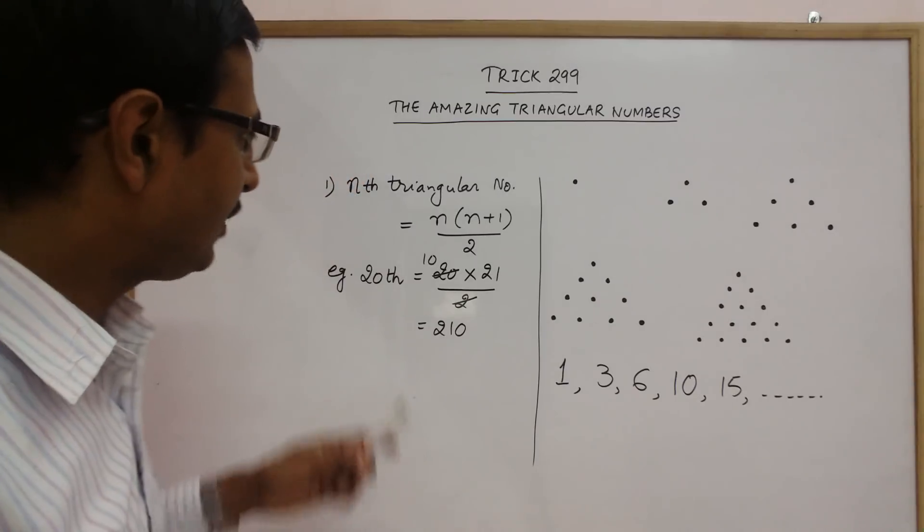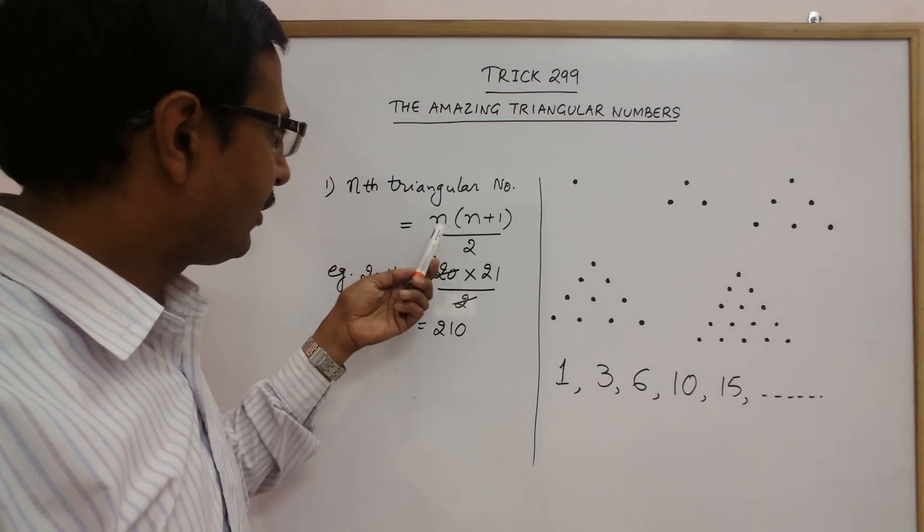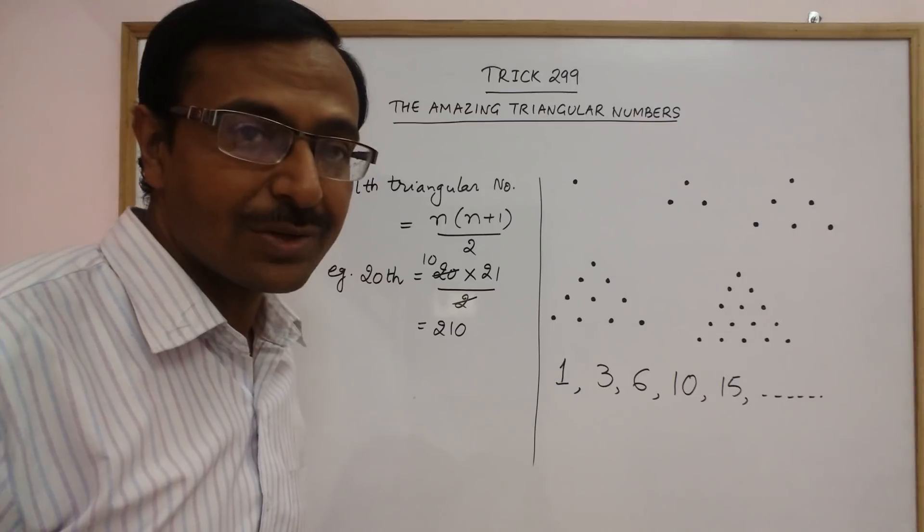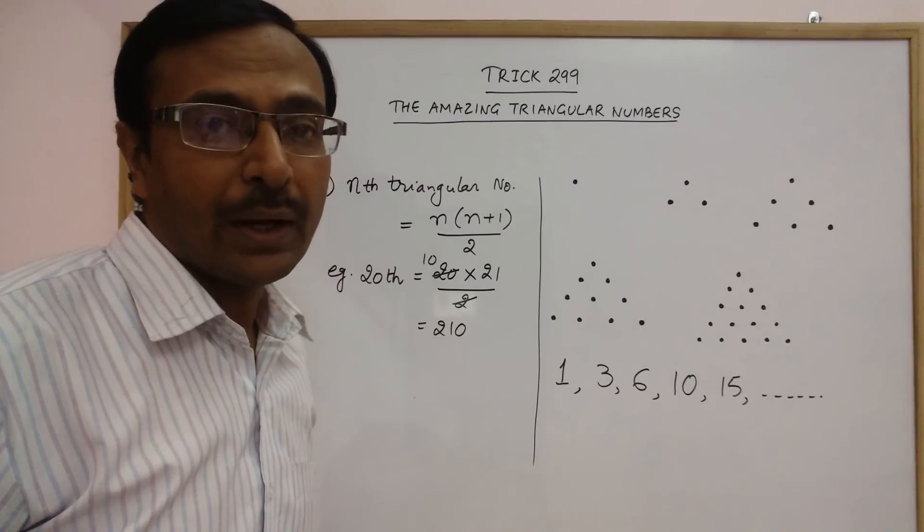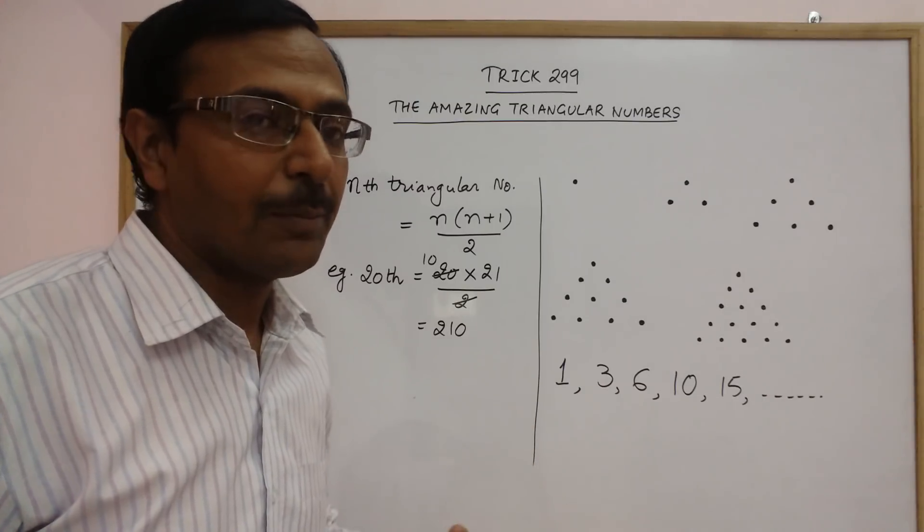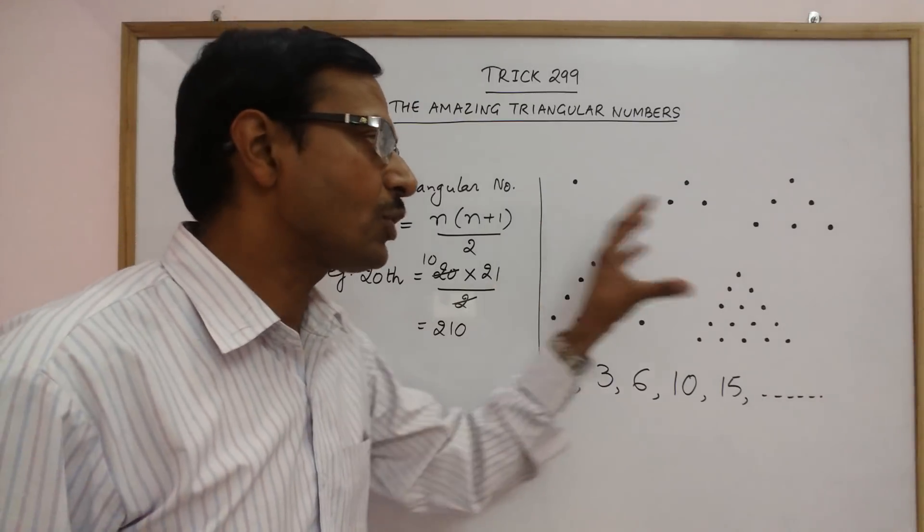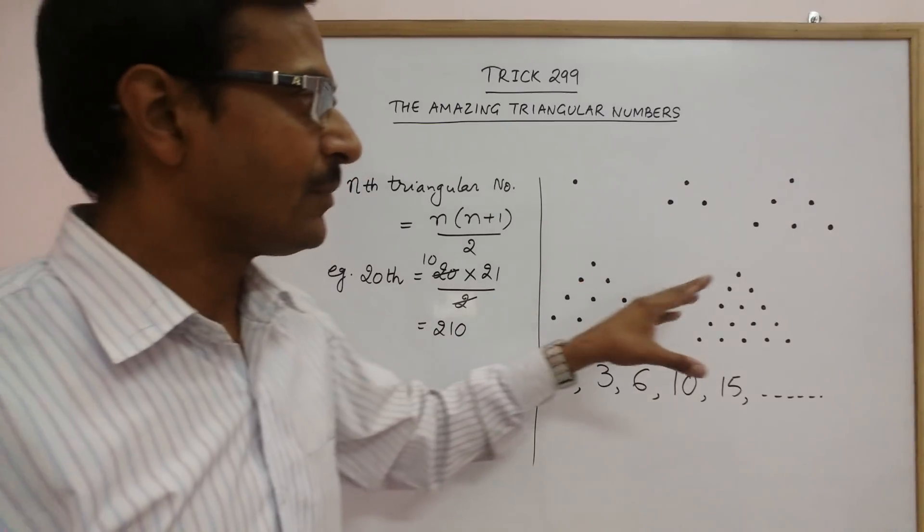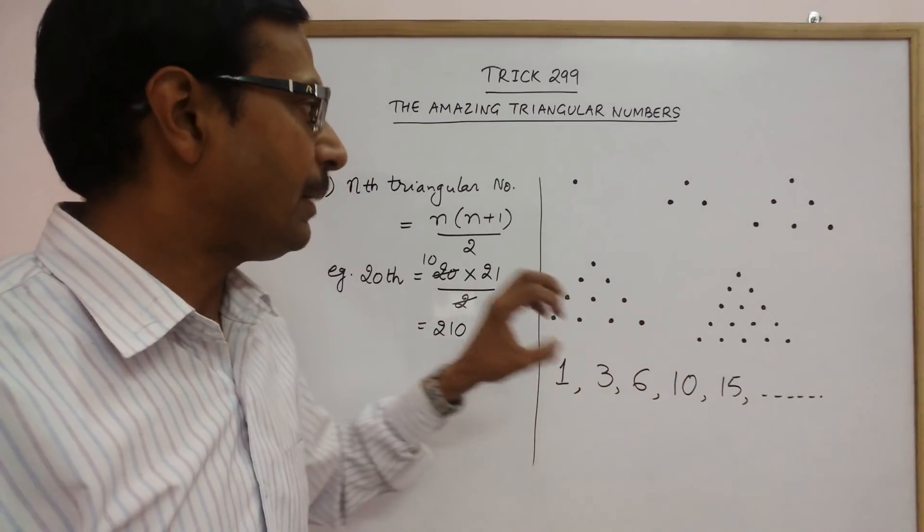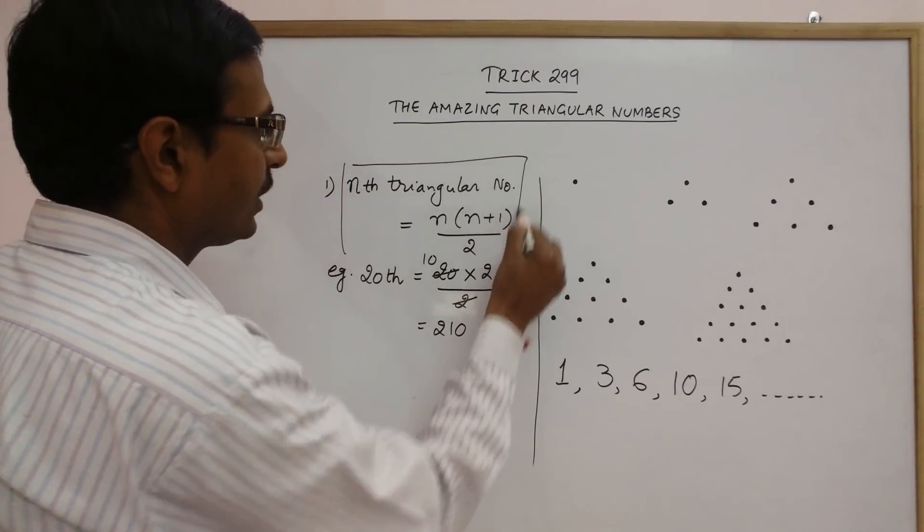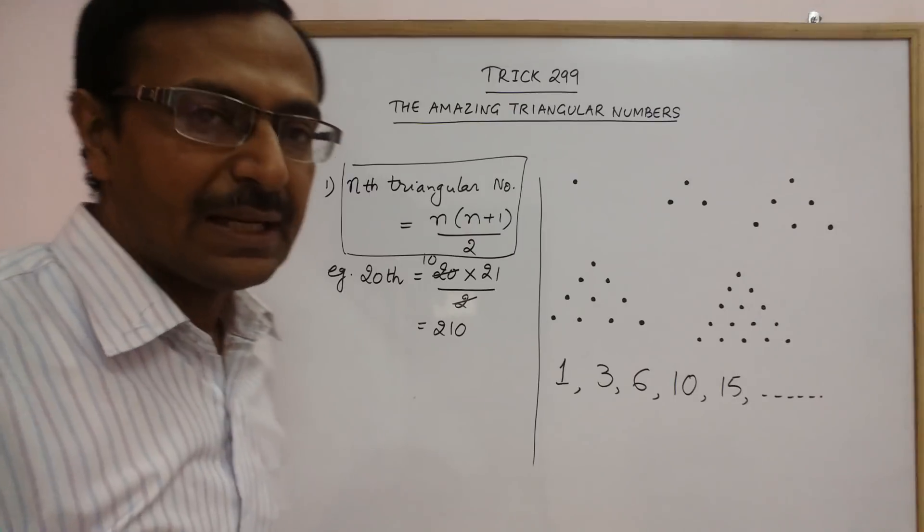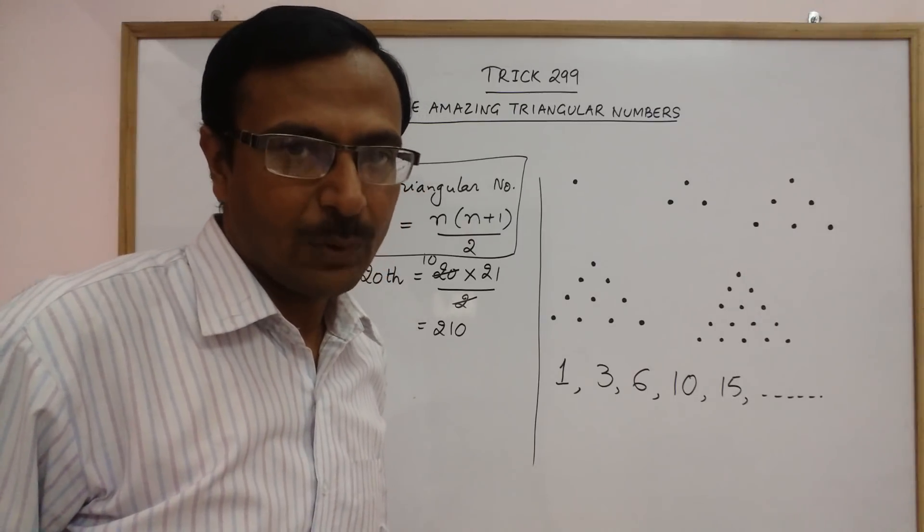Likewise, if you put the value of n as a larger number, you can find the 100th triangular number also and even 1 lakhth triangular number also. So, you don't need to draw the dots in these patterns to find a particular triangular number. Just use this formula. The nth triangular number is given by n into n plus 1 upon 2.